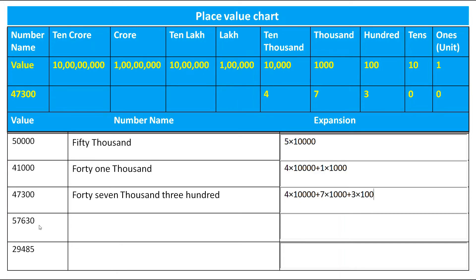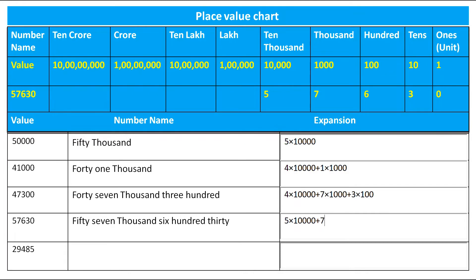The next number is 57,630. Let's put it in the place value chart. 5 is on 10,000 place, 7 is on 1,000 place, 6 on 100, 3 on 10s, and 0 on the unit place. The number name is fifty-seven thousand six hundred thirty. The expansion is 5 × 10,000 + 7 × 1,000 + 6 × 100 + 3 × 10.